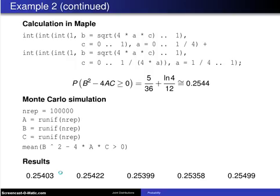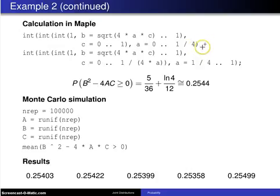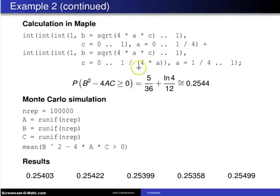Here are the two triple integrals computed in Maple. The first has b from √(4ac) to 1, c from 0 to 1, a from 0 to 1/4. The second has b from √(4ac) to 1, c from 0 to 1/(4a), a from 1/4 to 1. You could do these by hand, but Maple gives the result: (5/36) + ln(4)/12, which equals approximately 0.2544.